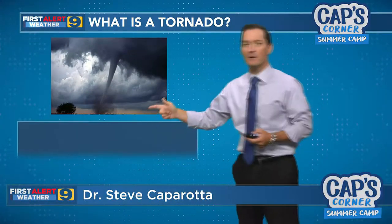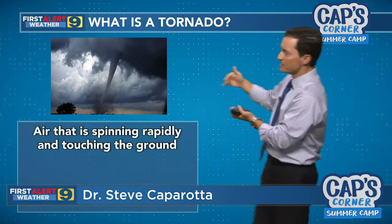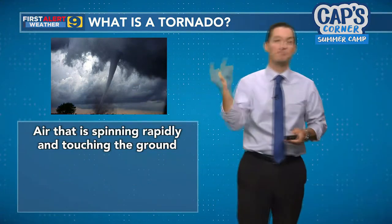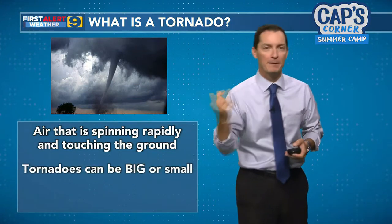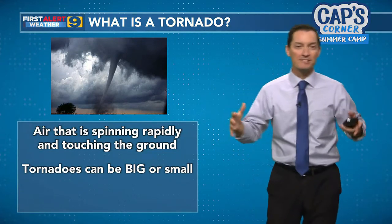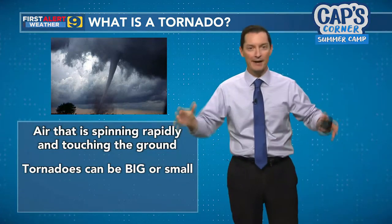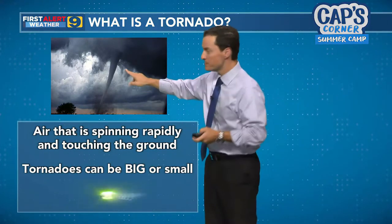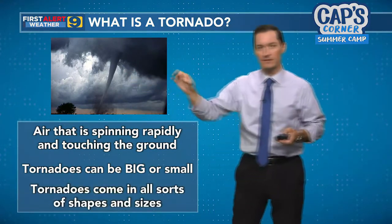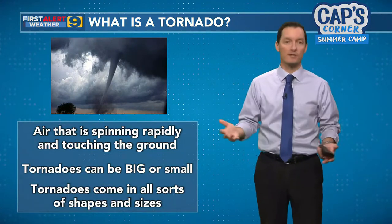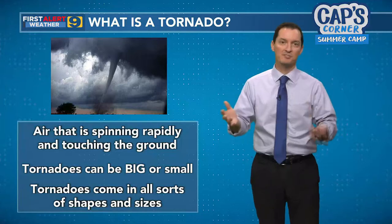Let me give you a look at one of those tornadoes. When we talk about tornadoes, all they are is a column of air that extends down from the cloud down to the ground. It's spinning very rapidly, very quickly. They can be really big — some of the biggest tornadoes can be a mile or two wide. They can also be really small. They come in all sorts of sizes and shapes.